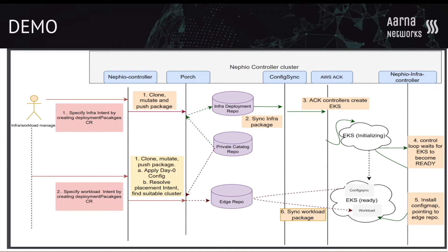The user then specifies the second intent, which is the workload intent. This workload intent includes the placement and day-zero configuration intent. The Nafio controller, as part of reconciling this intent, finds the suitable cluster and the corresponding repo. Based on the cluster's capability, it performs mutations on the base package and applies the scaling profile which the target cluster can handle. After performing the mutations, it pushes the curated package to the edge repo. The Config Sync in the EKS cluster syncs the workload package, resulting in deployment of the workload in the EKS cluster.